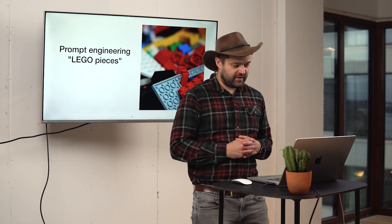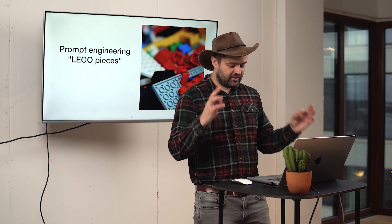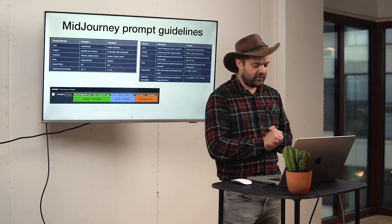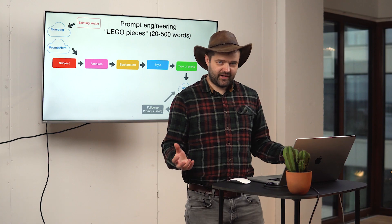The Lego pieces for image generation prompt engineering — which is different from ChatGPT prompt engineering — involve using MidJourney, which allows image prompts as well. DALL-E 3 doesn't have image prompts yet but hopefully will soon. For text prompts, you define the type, subject, features, style, and aspect ratio. The more information you define, the better the result.